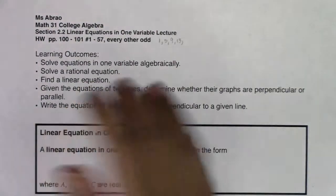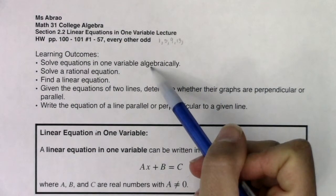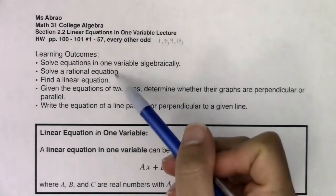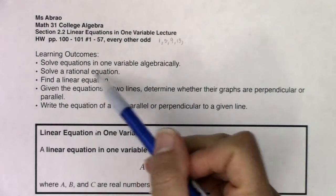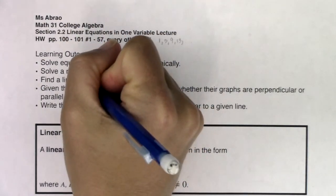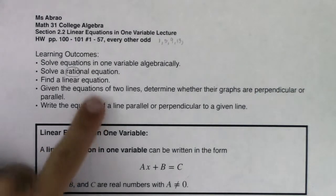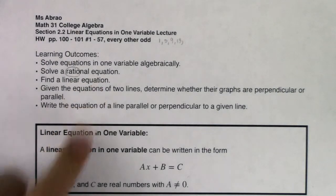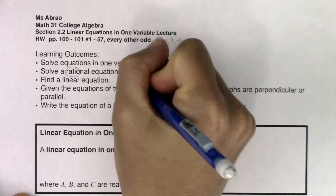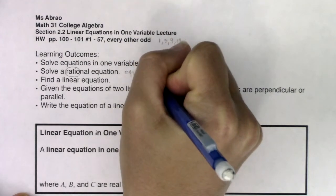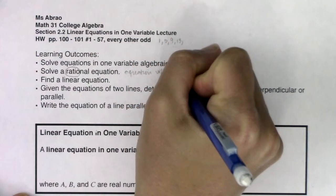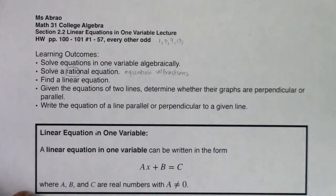Our learning outcomes for this section: we're going to solve equations in one variable algebraically. We're going to solve rational equations, and in that word rational, the key word is ratio. When you hear ratio, we're talking about fractions, everybody's favorite. So when I say rational equation, we're talking about an equation with fractions in it.